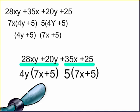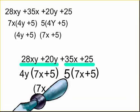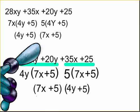We have 7x plus 5 and 7x plus 5, so we can factor one out. The two remaining terms are 4y and a positive 5. Notice, we arrived at the same answer: 7x plus 5 times 4y plus 5. Oh yeah. Let's rock and roll.